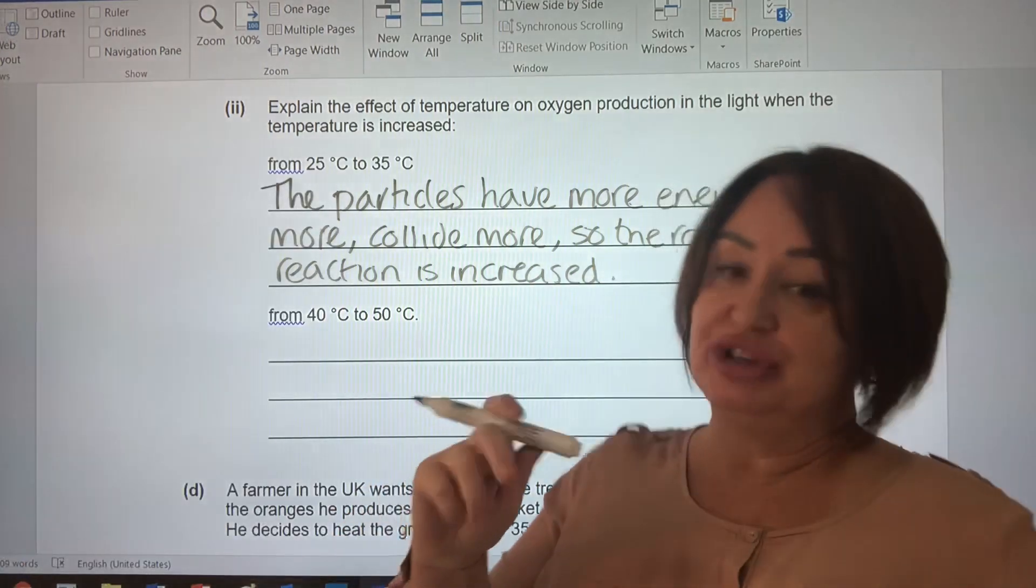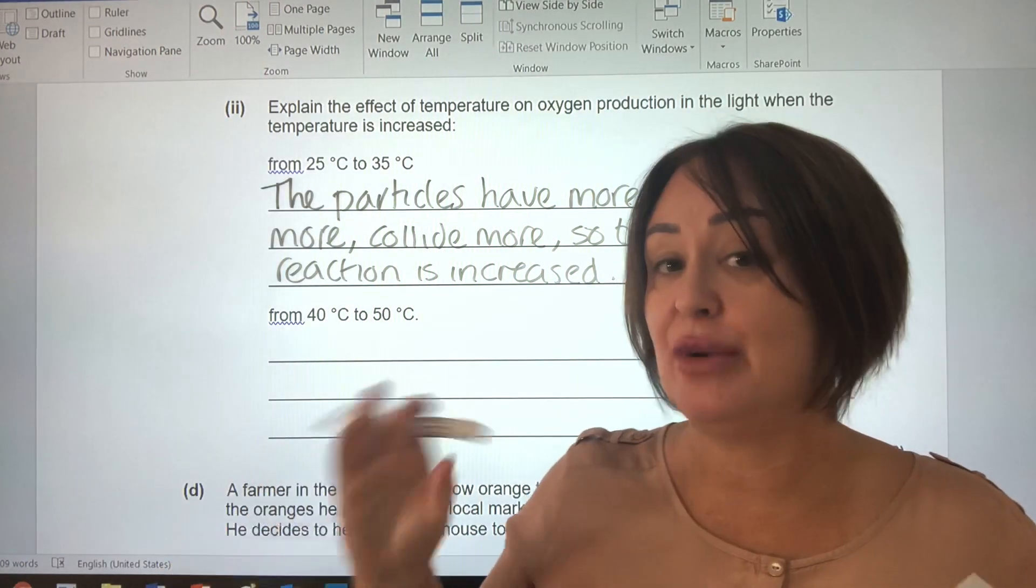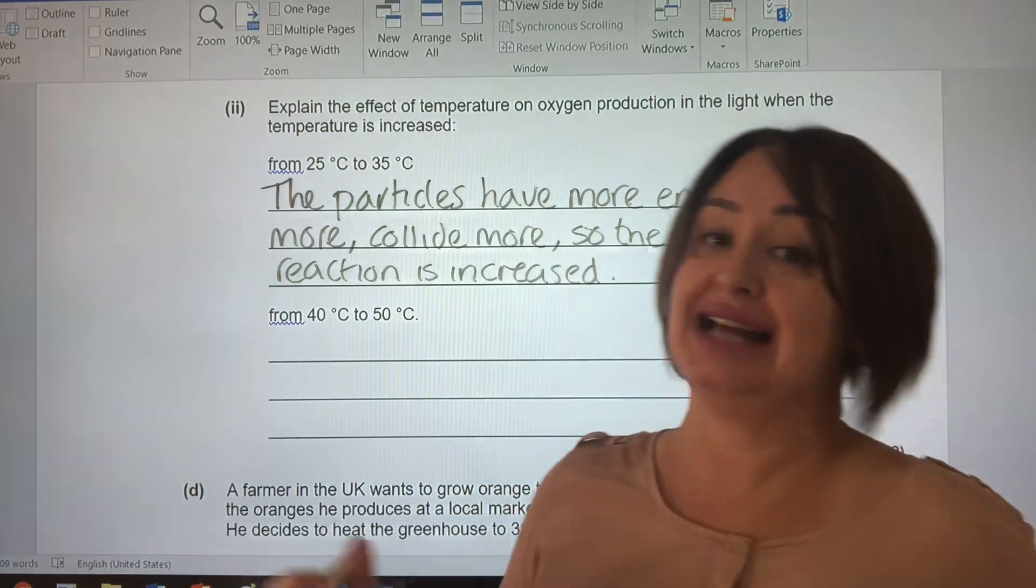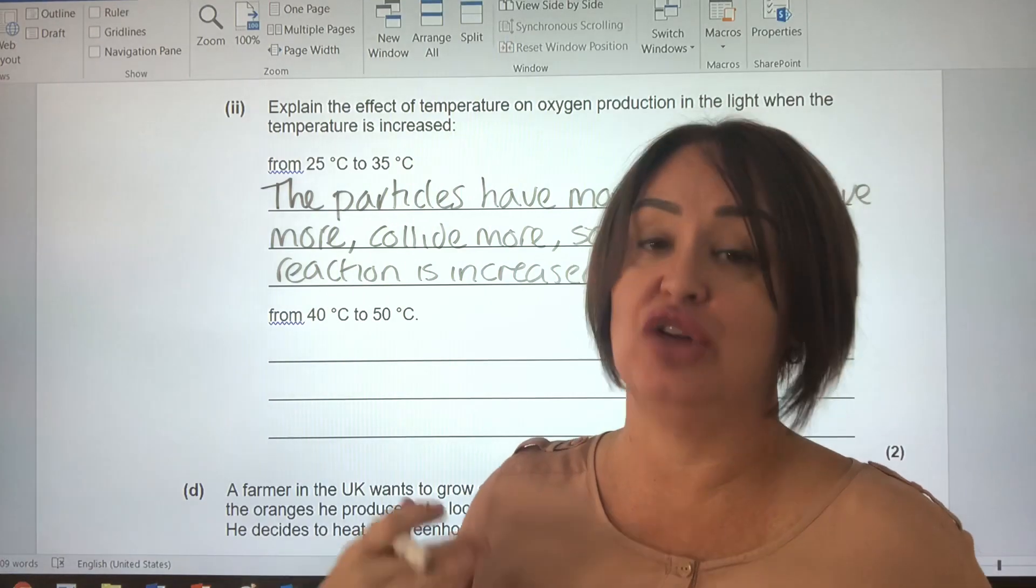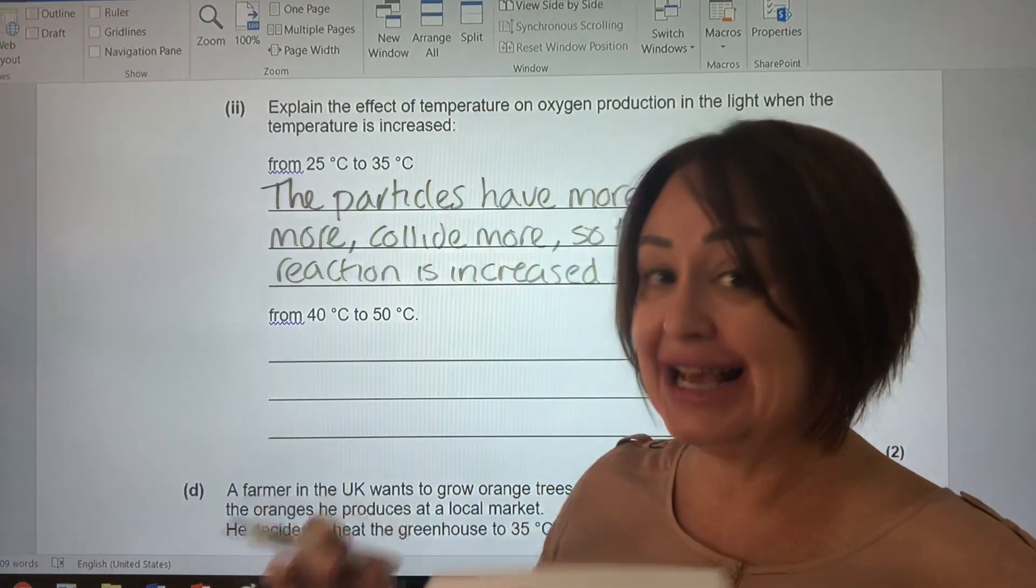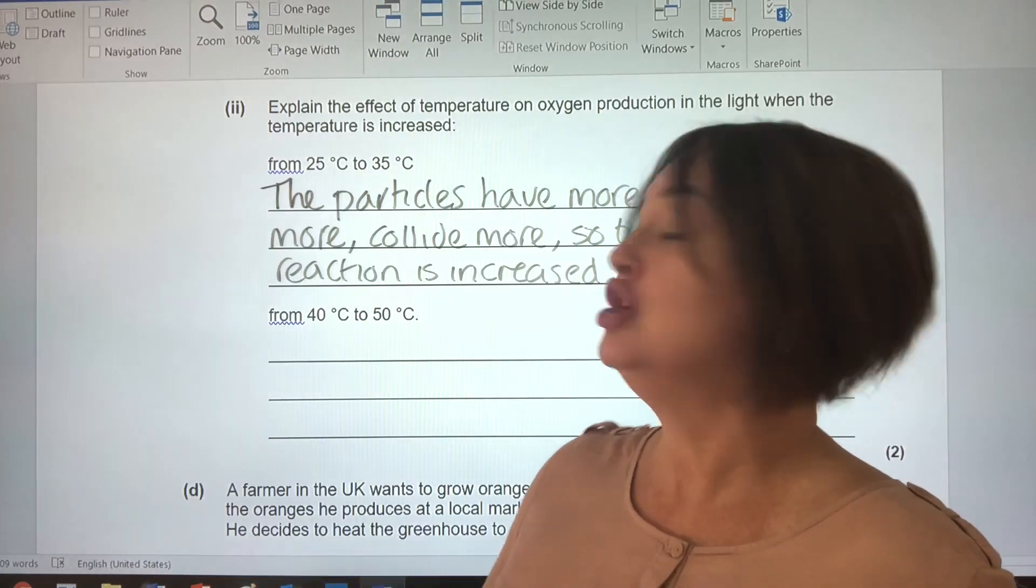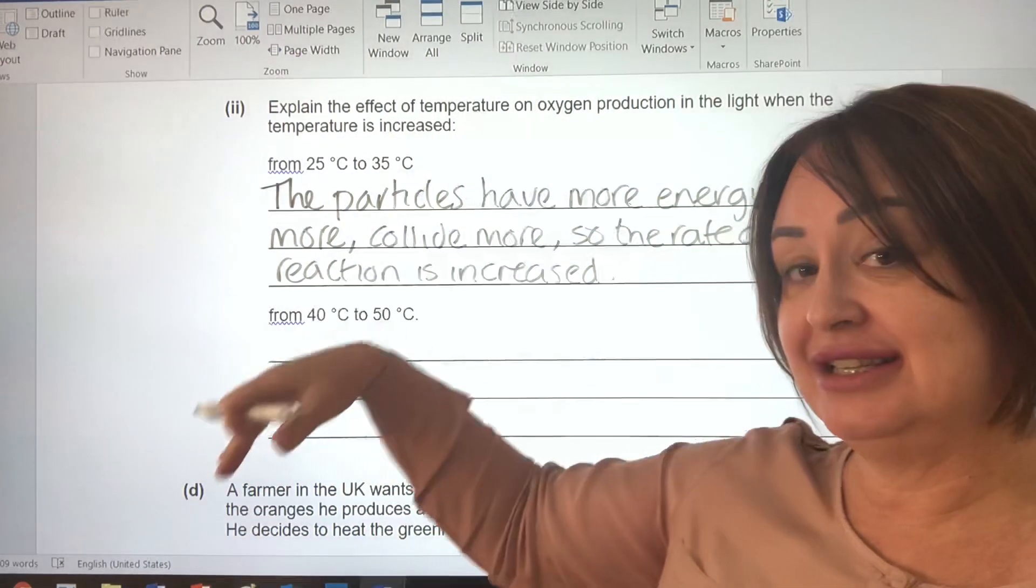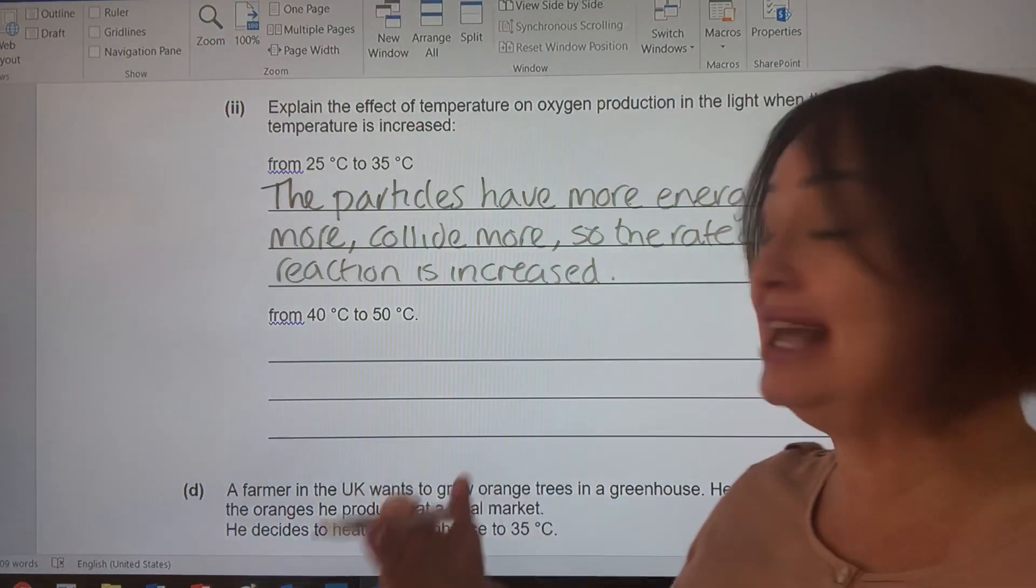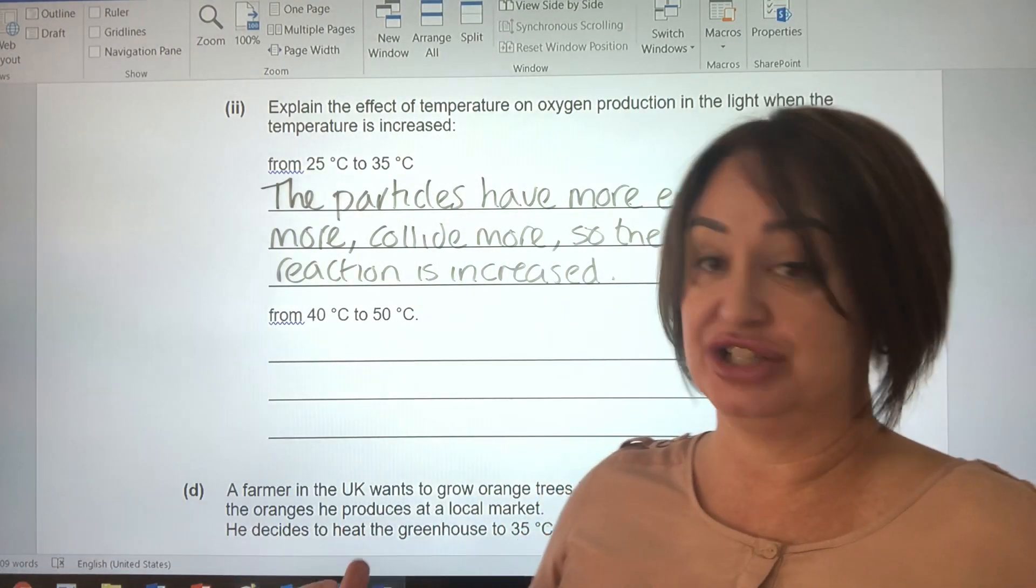In chemistry, the more you increase the temperature, the greater the rate of reaction. However, in biology, we have an end point. And it's usually at about 40 degrees, depending on the organism. And that is because at that point, that's when our enzymes denature. So that explains the decrease in the rate of oxygen production because the enzymes involved in photosynthesis are denatured.